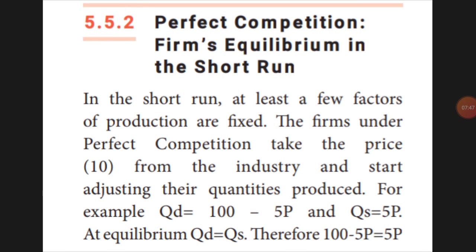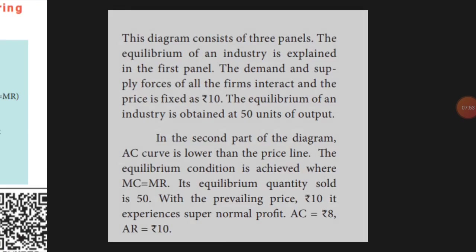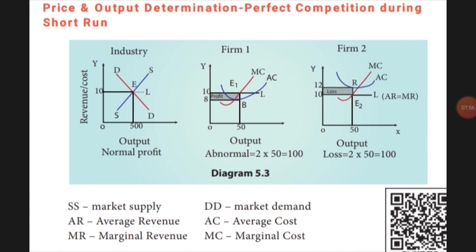Next we will go for perfect competition in the short run. In the short run, three diagrams are given. The first diagram represents a situation where, as usual, for 10 rupees I can sell 50 units with no profit and no loss — normally, I get a normal profit.